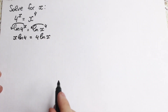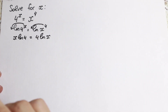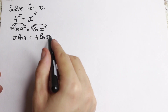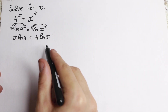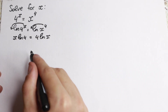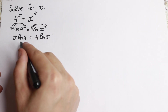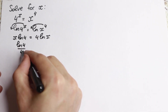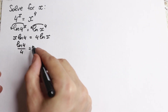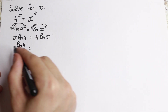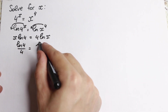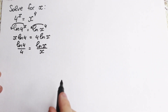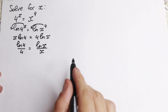A lot of times it's really good to bring all our variables to one side. So let's divide the left-hand side by 4, and divide both sides by x. We will have natural log 4 over 4 equal to natural log x over x. So we just simplify this a little bit.